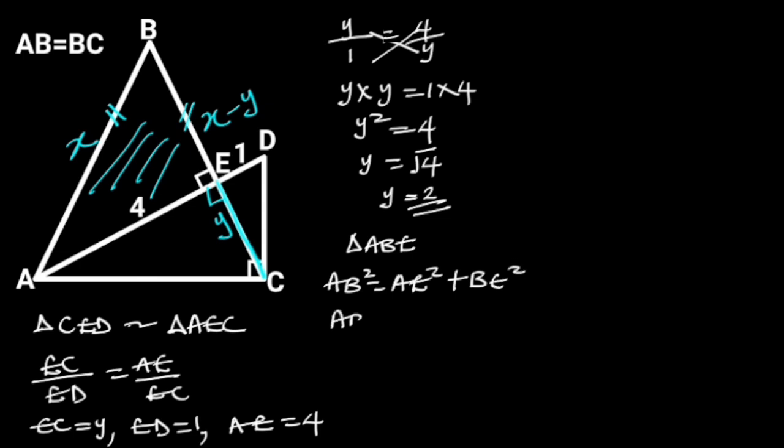AB is equal to X, AE is equal to 4, and BE is equal to X minus Y, which is equal to X minus 2. Substituting these values in the formula will give us X squared is equal to 4 squared plus X minus 2 squared.